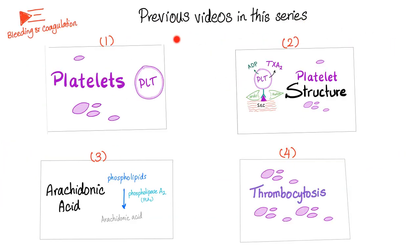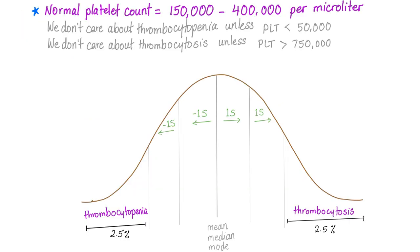Here are my previous videos in this series — it's called Bleeding and Coagulation. Make sure to subscribe and save this playlist. Normal platelet count is 150,000 to 400,000 per microliter. We don't care about thrombocytopenia unless it's less than 50,000.